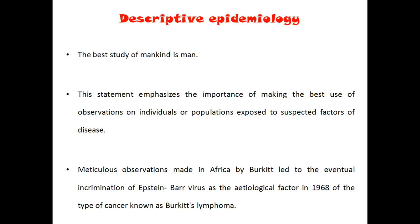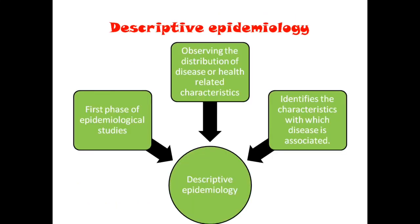How to conduct a descriptive epidemiological study — this is a very common study which everyone can easily perform and it is the very first step of any type of study. It is just collecting data of any group of people regarding any particular disease or anything. In short, descriptive epidemiology is the first phase of epidemiological study. We will be observing the distribution of disease — how it is distributed among the people — and what are the characteristics of the disease associated.